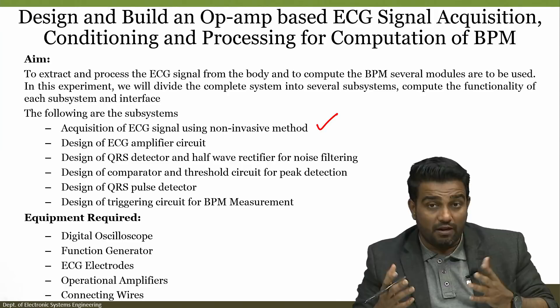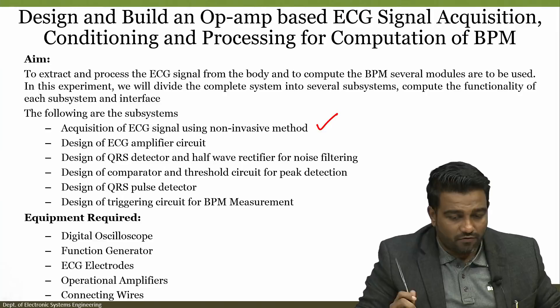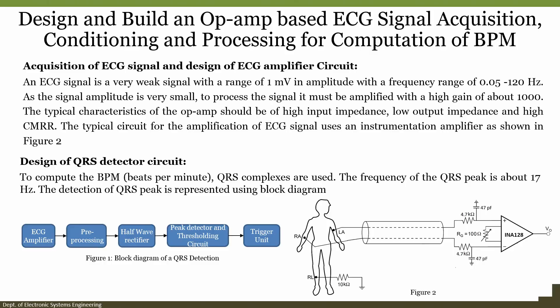The first subsystem is acquisition of ECG signals and design of the ECG amplifier circuit. An ECG signal is a very weak signal with a range of just 1 millivolt in amplitude and a frequency range of 0.05 to 120 hertz. Since the signal amplitude is very small, to process the signal it must be amplified with a high gain of about 1000. The typical characteristics of the op-amp should be high input impedance, low output impedance and high CMRR. The typical circuit for amplification of ECG signals uses an instrumentation amplifier.